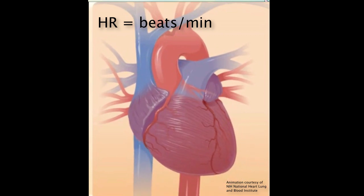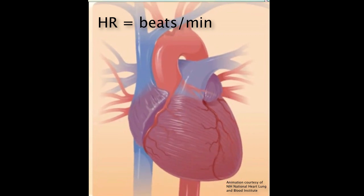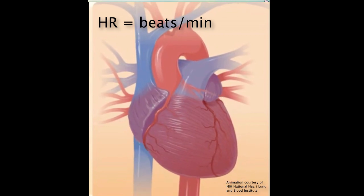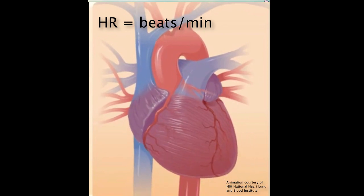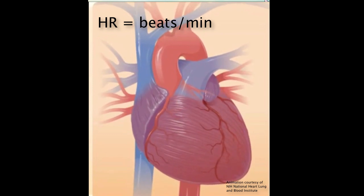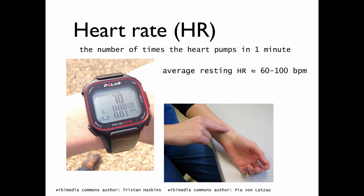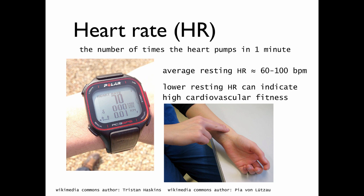And this can be sped up or slowed down. An average resting heart rate ranges between 60 to 100 beats per minute. A lower resting heart rate can indicate a higher cardiovascular fitness.